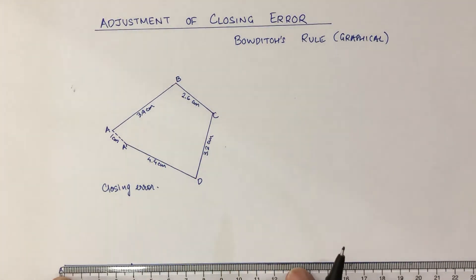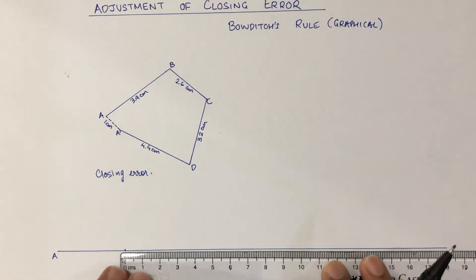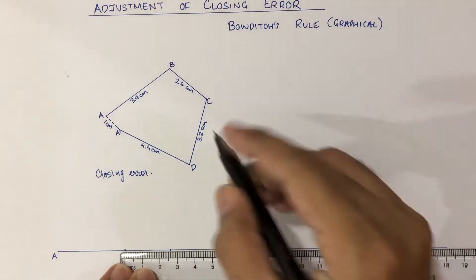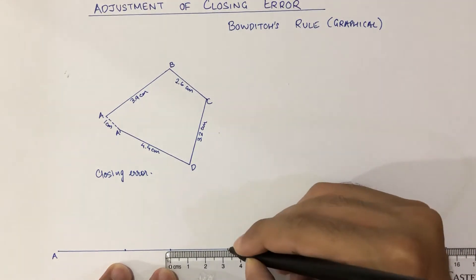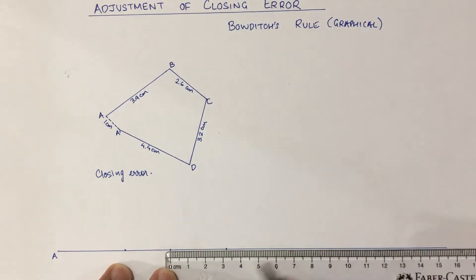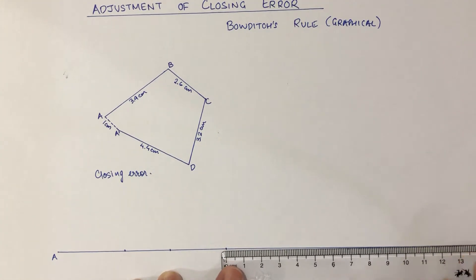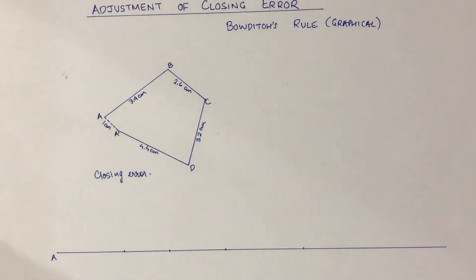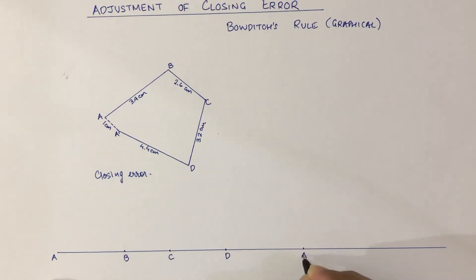Then we measure length BC of 2.6 centimeters from the 3.9 mark onwards, so it comes somewhere here. Then we measure CD, which is 3.2 centimeters, coming somewhere here. Finally, we have DA' that is 4.4 centimeters. So on the straight line we have points A, B, C, D, and A'.